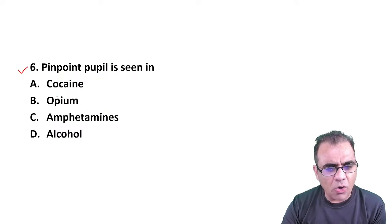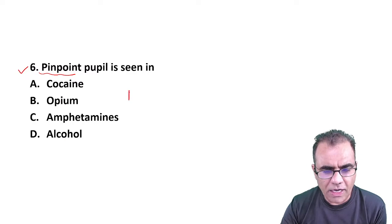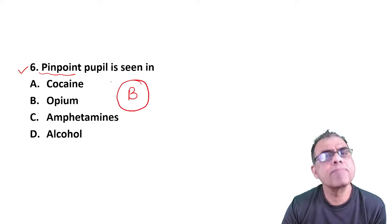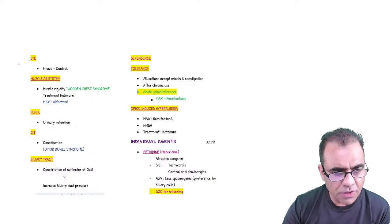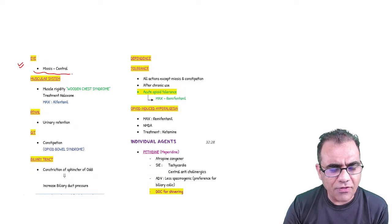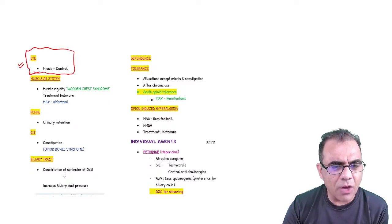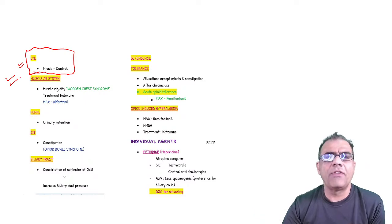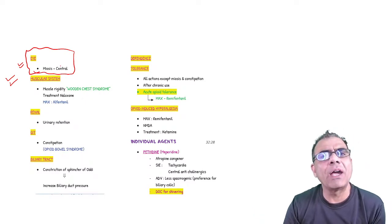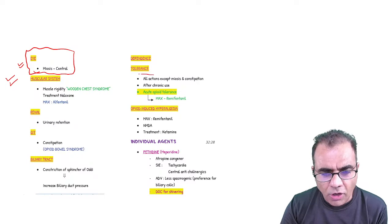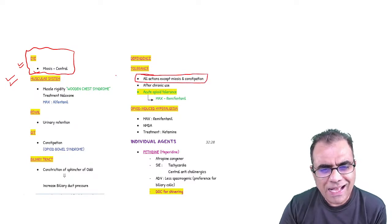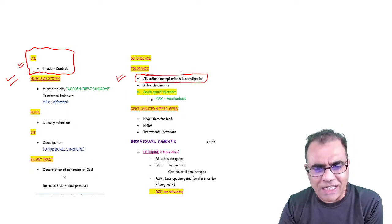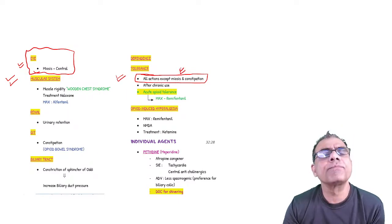Question 6: Pinpoint pupil is seen in cocaine, opium, amphetamine, or alcohol? Pinpoint pupil, beyond any doubt, is opiates. From the notes, the effect is miosis — and this miosis is central miosis, not an effect on the eye itself. Importantly, there is no tolerance developed to miosis with opioids. Tolerance exists to all actions of opioids except miosis and constipation.